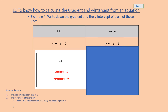Let's go for another one. So y equals minus x minus nine. It's like an invisible one in front of the x, so the coefficient is minus one — negative one — and the y-intercept is negative nine.